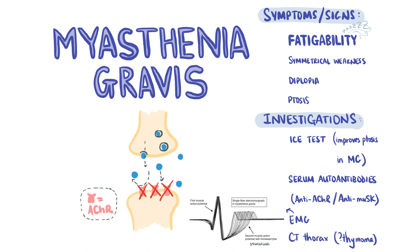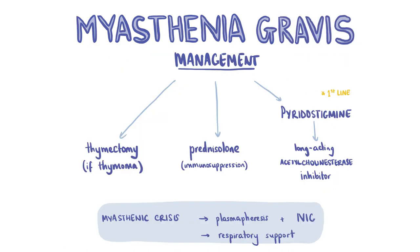Anti-muscle specific tyrosine kinase antibodies are also known as anti-MuSK antibodies. Electromyography is another important investigation which shows the fatigability of muscles. A CT thorax can be used to exclude thymoma, as thymomas can be found in about 15% of cases of myasthenia. The CT thorax can also exclude bronchogenic carcinomas, which are also associated with myasthenia gravis. The tensilon test can also be done to diagnose MG but is to be avoided as it can cause arrhythmias. If a thymoma was found, then management will include thymectomy.